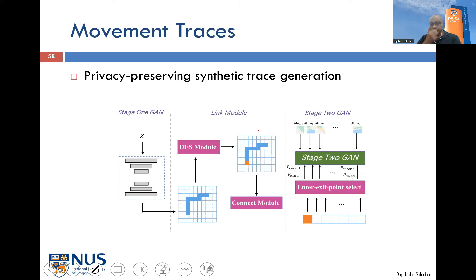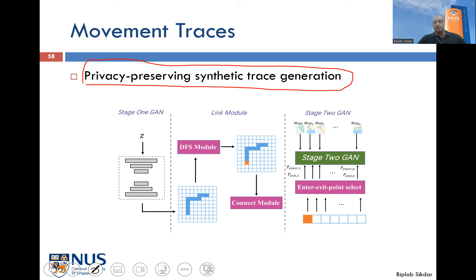Another specific problem is that when optimizing transportation systems, you want to know the path taken by certain vehicles. But if you know someone's origin and destination, that compromises their privacy — you may learn where they live or work. We want transportation system operators to have some idea about journey start and end points, but without exact information. Instead of using real information, can we generate synthetic traces that have the same statistical properties but are not related to any specific human and cannot be traced back? There is a lot of work going on in generating these privacy-preserving traces.